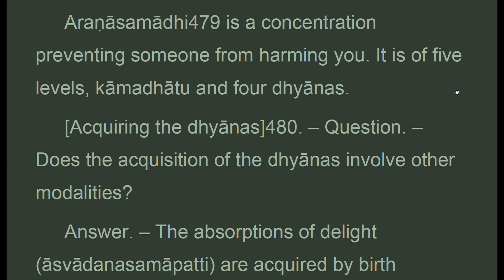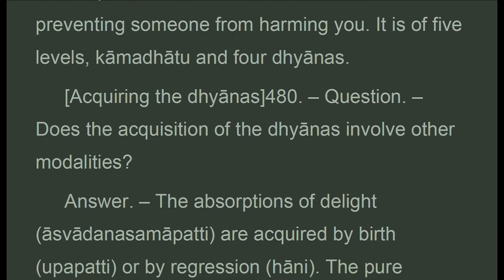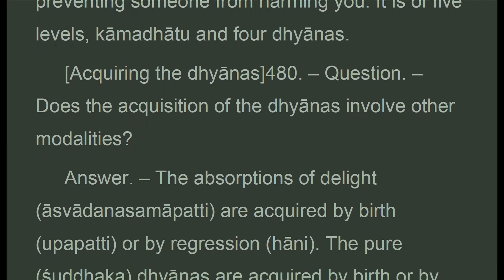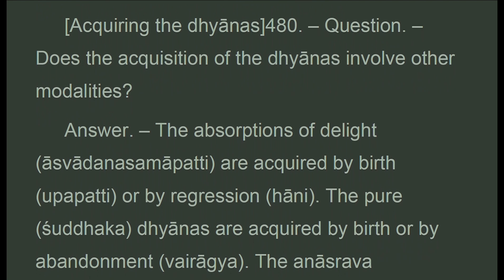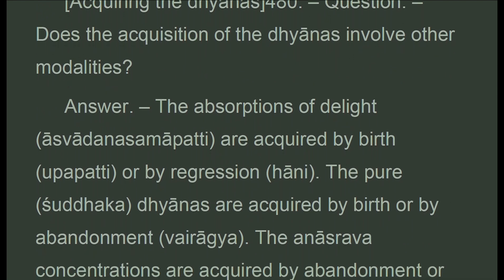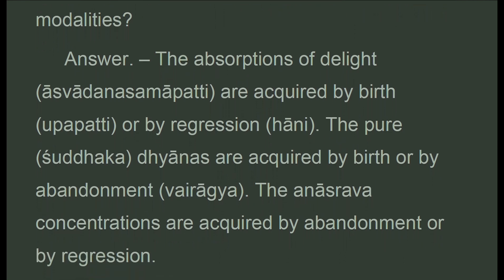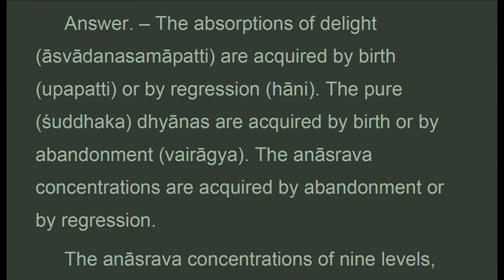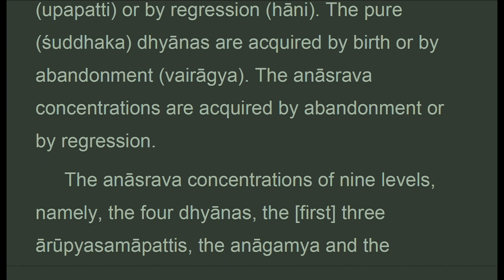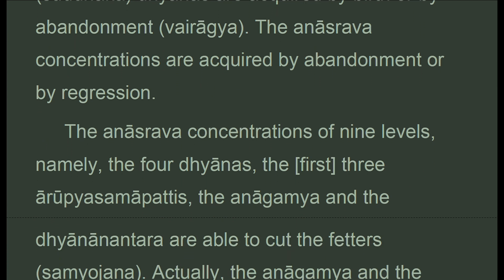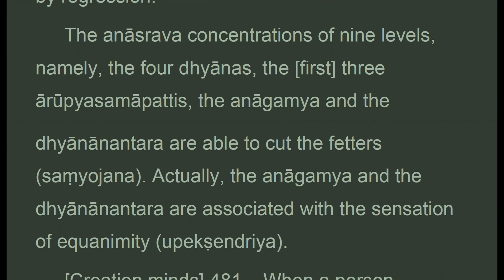Concentration preventing someone from harming you is of five levels: kamadhatu and four dhyanas. Regarding the acquisition of dhyanas: the absorptions of delight are acquired by birth or by regression; the pure dhyanas are acquired by birth or by abandonment; the anasrava concentrations are acquired by abandonment or by regression. The anasrava concentrations of nine levels — namely the four dhyanas, the first three arupya samapattis, the anagamya, and the dhyanantara — are able to cut the fetters.